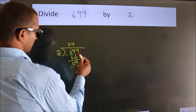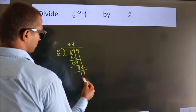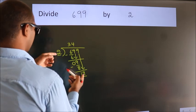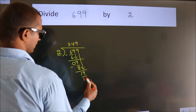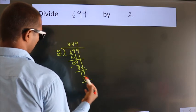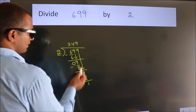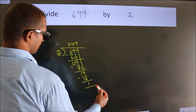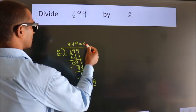After this, bring down the beside number. So 9 down. So 19. A number close to 19 in 2 table is 2 nines 18. Now we subtract. We get 1. No more numbers to bring it down. So we stop here. This is our remainder. This is our quotient.